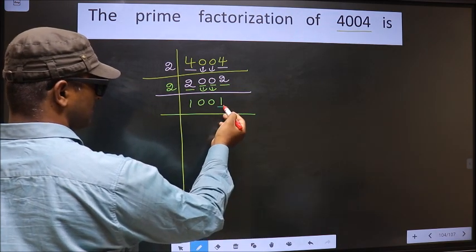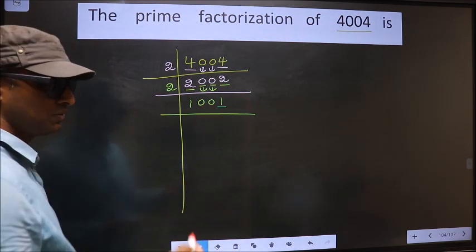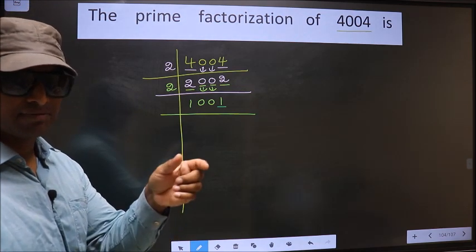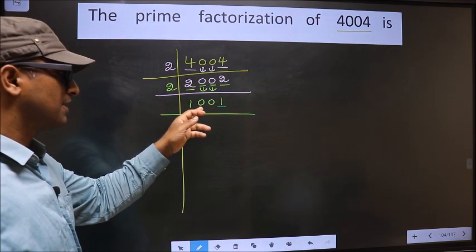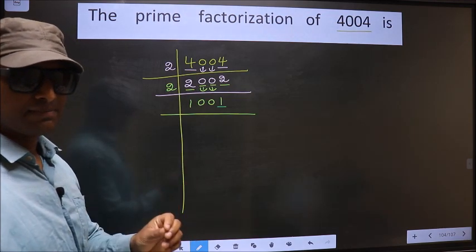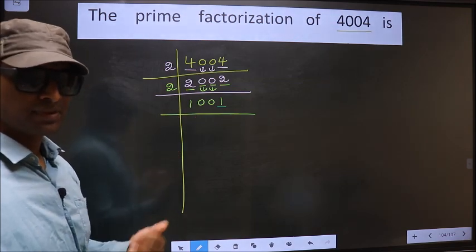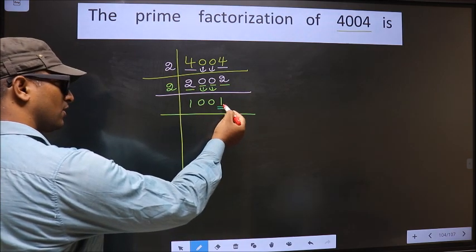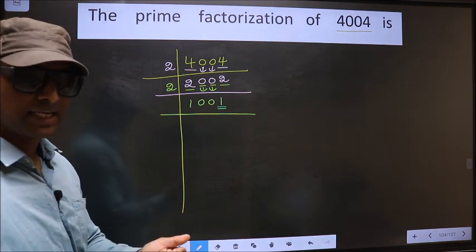Now for 1001, the last digit is 1, which is not even. So this number is not divisible by 2. Next prime number: 3. To check divisibility by 3, we add the digits: 1 + 0 + 0 + 1 = 2. Is 2 divisible by 3? No. So this number is also not divisible by 3. Next prime number: 5. The last digit is neither 0 nor 5, so this number is not divisible by 5.